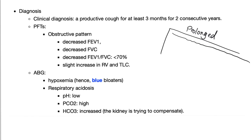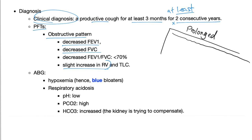Chronic bronchitis is a clinical diagnosis: productive cough for at least three months for two consecutive years — and "at least" means three years still qualifies. PFTs show an obstructive pattern: decreased FEV1, decreased FVC, increased residual volume and TLC, and decreased FEV1-to-FVC ratio. That's how you diagnose obstructive lung disease. For severity, look at FEV1 only — not the ratio. The lower the FEV1, the greater the severity.